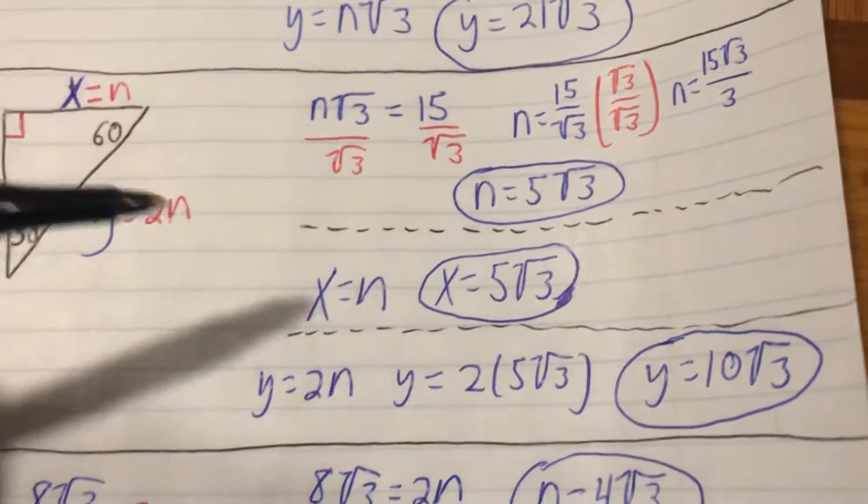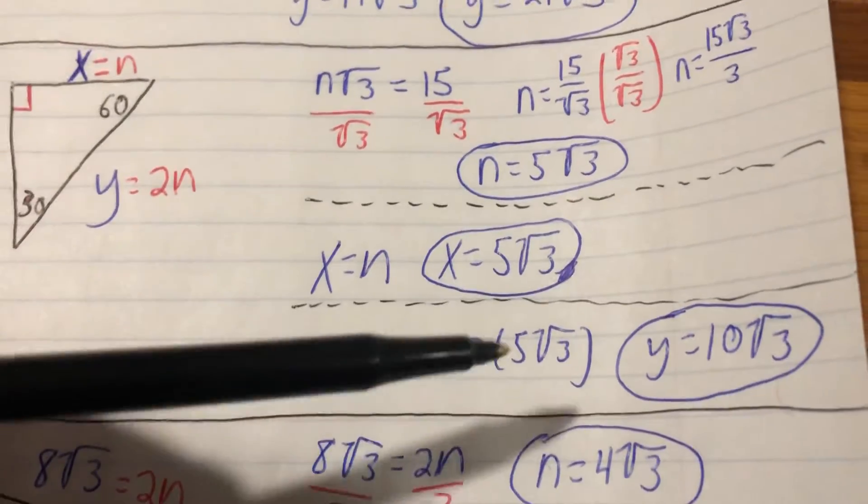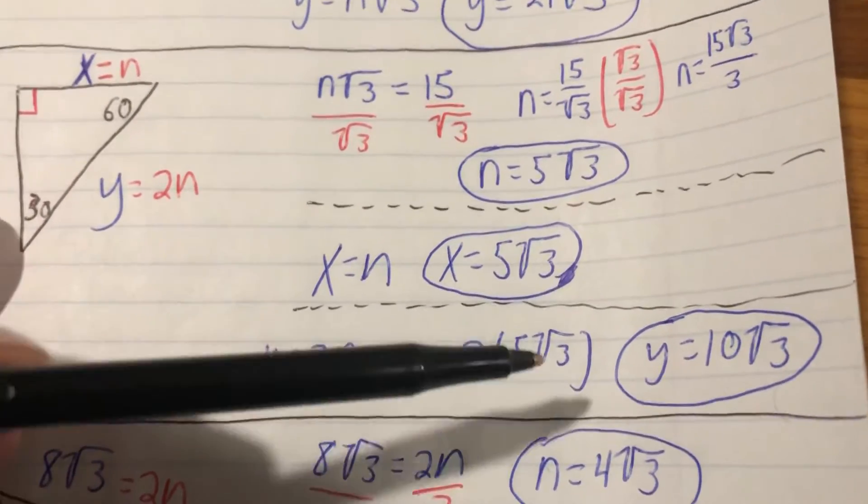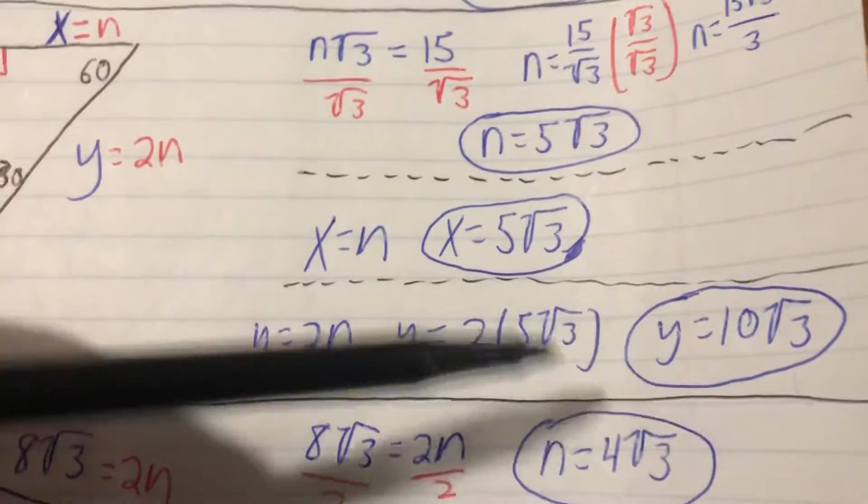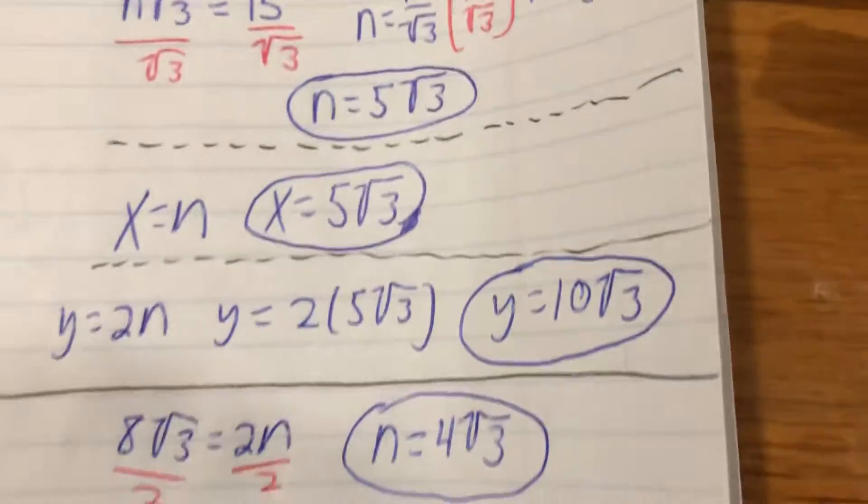y is equal to 2n, so y is going to be equal to 2 times 5√3. Remember, the 2 and the 5 get multiplied to be 10, the √3 is glued to them by multiplication, so we got y equals 10√3.